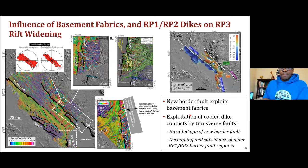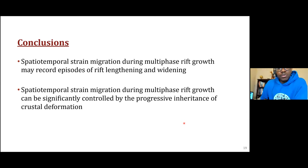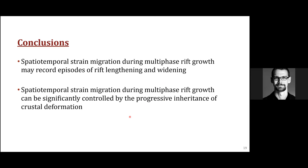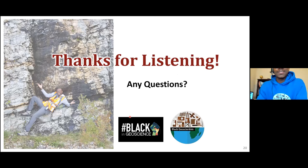Overall, we conclude that spatial-temporal strain migration during multi-phase rift growth may actually record episodes of rift lengthening and widening, and not necessarily basinward migration and localization of tectonic strain. Furthermore, the spatial-temporal strain migration during multi-phase rift growth can be significantly controlled by the progressive inheritance of pre-existing deformation structures. Thanks for listening, and I welcome your questions.